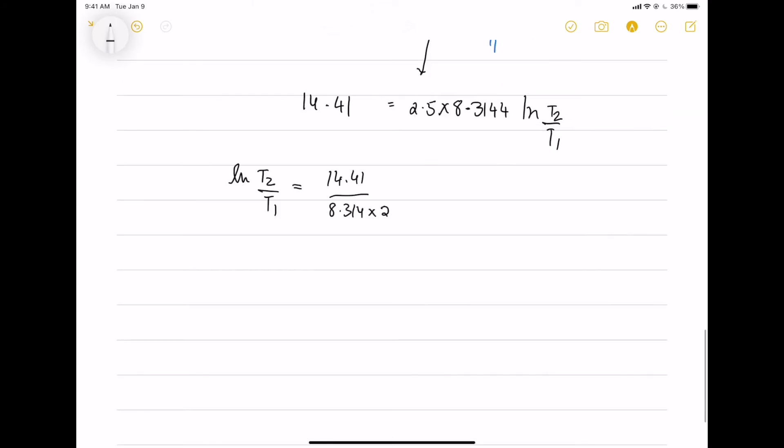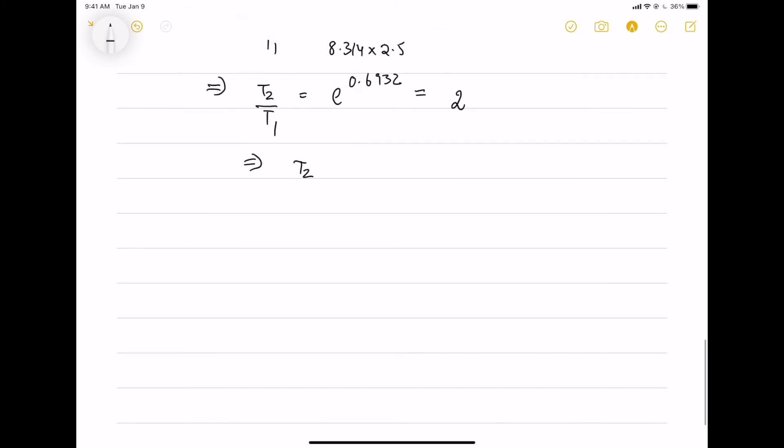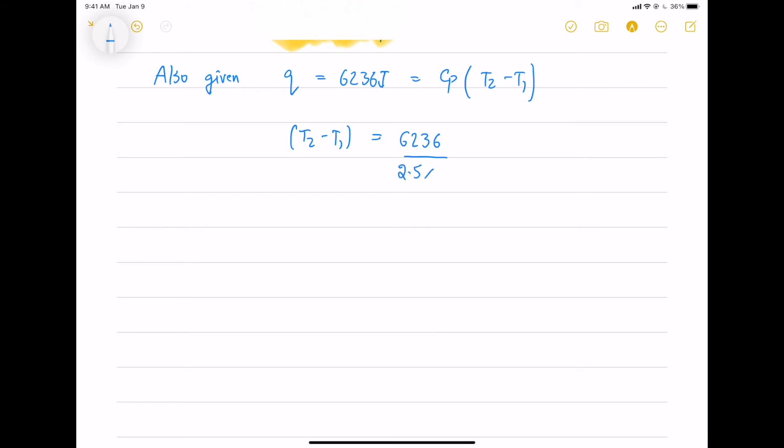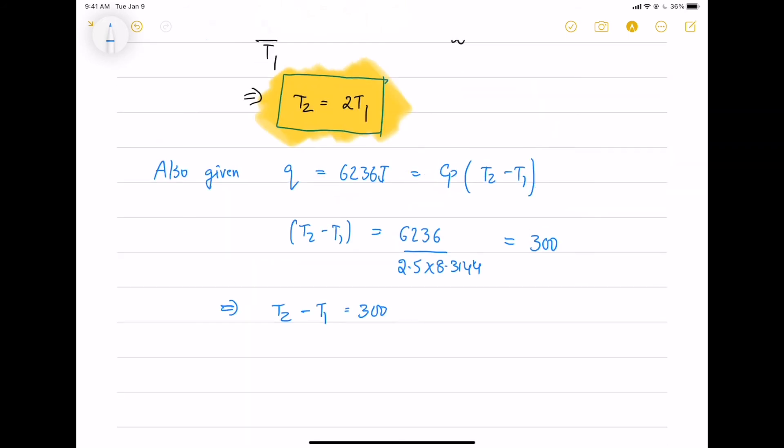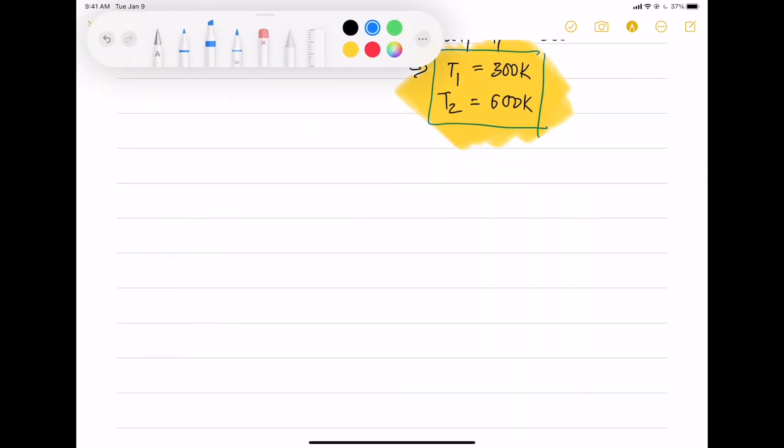Now we will derive the relation between T2 and T1. That would happen to be T2 equals to 2 times T1. Also given that the heat equals to 6236 Joule which equals to Cp times T2 minus T1. From this we know the difference between T2 and T1 that is 300. Now, we will use the above relation to get T1 and T2 as 300 Kelvin and 600 Kelvin.